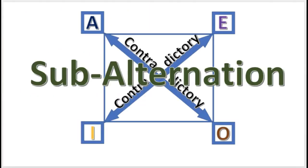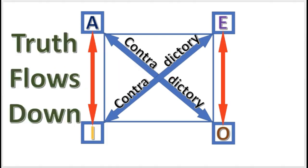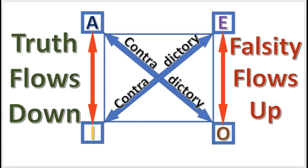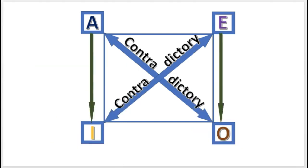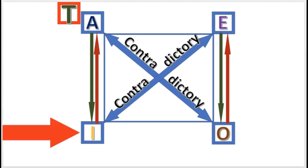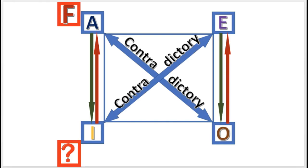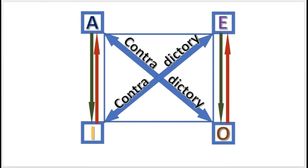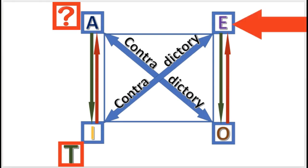Subalternation is next. The relation exists on the sides of the square — between the A and the I, and between the E and the O. Subalternation says that truth flows downwards and falsity flows upwards. It can be represented with arrows: the true arrows point down and the false arrows point up. So if the A proposition is true, then the I is true. And if the I is false, then the A is false. But if the A is false, then the I is undetermined, because falsity does not flow downward. Similarly, if the I is true, then the A is undetermined. The same results hold for the E and the O propositions.